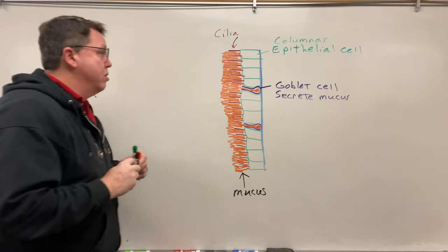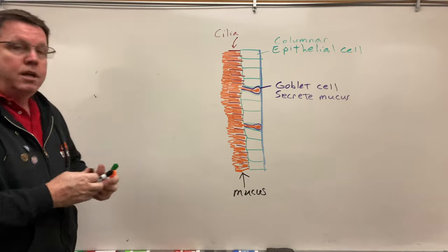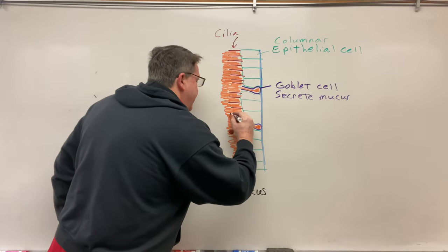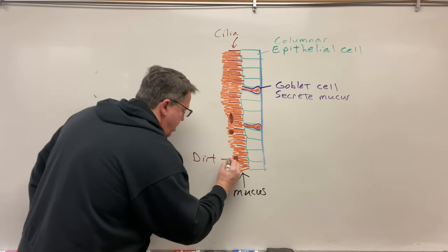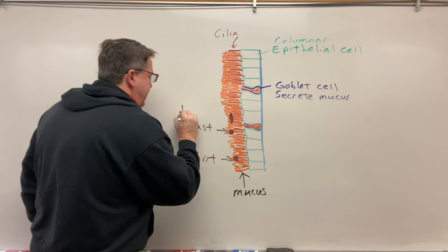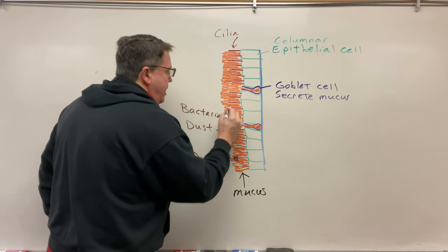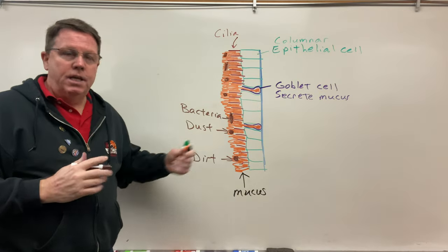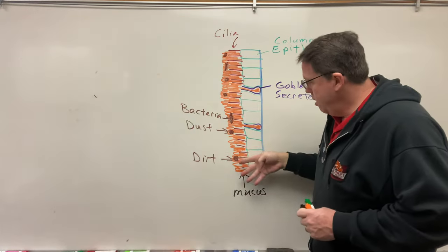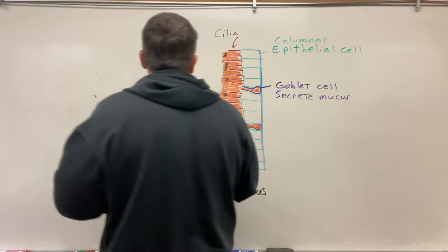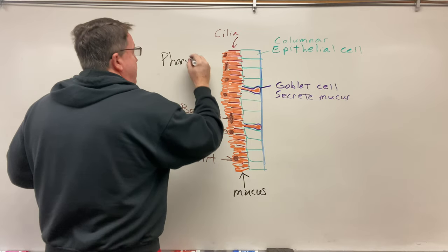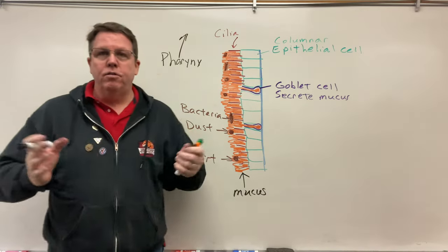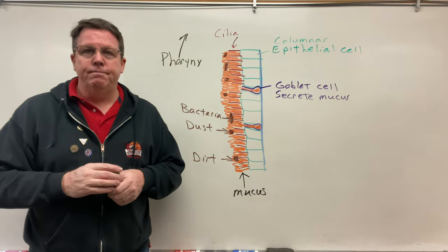I'm going to stick some microbes in there — I'm going to call this one dirt, let's make this one a piece of dust, let's make this one a bacteria. So I'm going to put dirt, dust, bacteria, and anything else that you breathe in. Now it's all getting caught in the mucus. The cilia here are going to move this up towards the throat — the pharynx is this way. So these cilia are going to move all this stuff up to the throat, then you swallow it, and that's basically the respiratory mucosa. Thank you so much for watching.